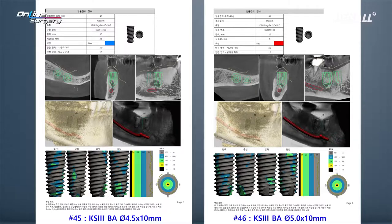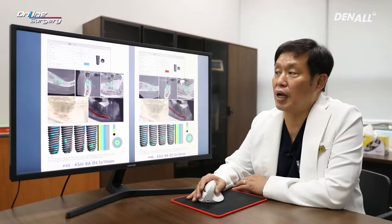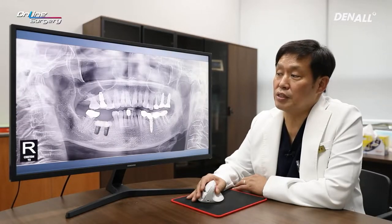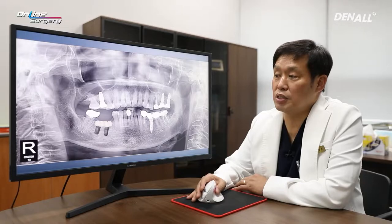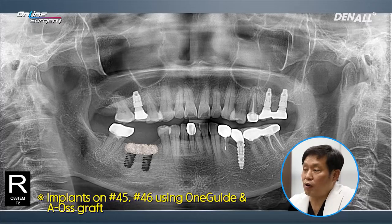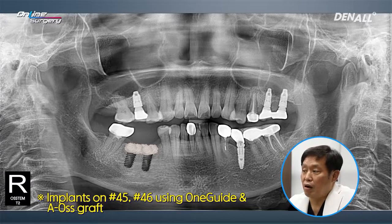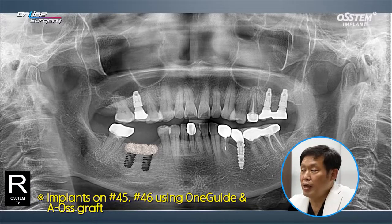In number 45, KS3 4.5 by 10 mm and in number 46, KS3BA surface 5.0 by 10 mm implants were planned. As shown on the CT, buccal bone is not fully consolidated. Therefore, OneGuide will be used to place the implants, and afterward, AOS graft or bovine bone graft will be done on top.